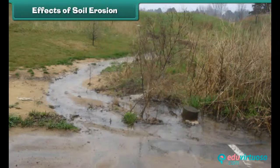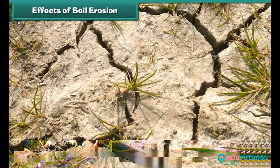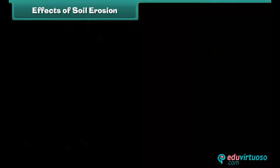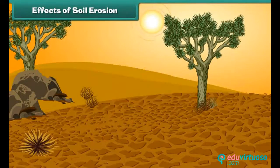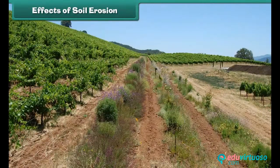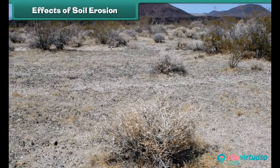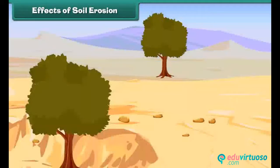Soil erosion leads to many unfavorable conditions. It results in the loss of soil and breakdown of the soil structure. It decreases soil fertility due to a decrease in the amount of organic matter, and also reduces the moisture content of soil, resulting in drought conditions. Decrease in soil fertility leads to a decrease in the quality and quantity of crops, affecting natural vegetation badly, which can lead to fertile land turning into desert.